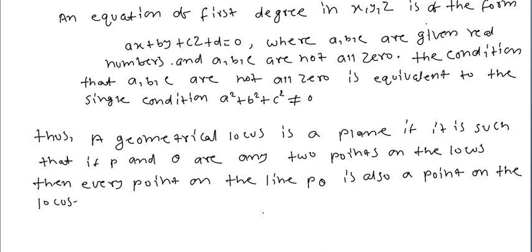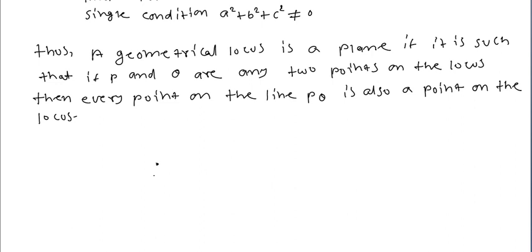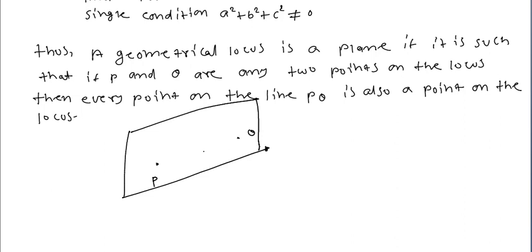The definition of the plane: a geometrical locus is a plane if it is such that if P and Q are any two points on the locus, then every point on the line PQ is also a point on the locus. That is, we have two points P and Q in the plane, and all points on the line joining them also lie in the plane.